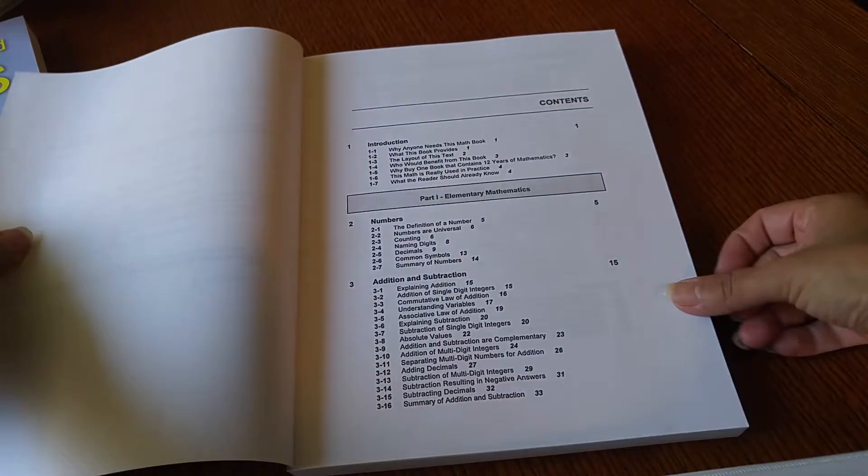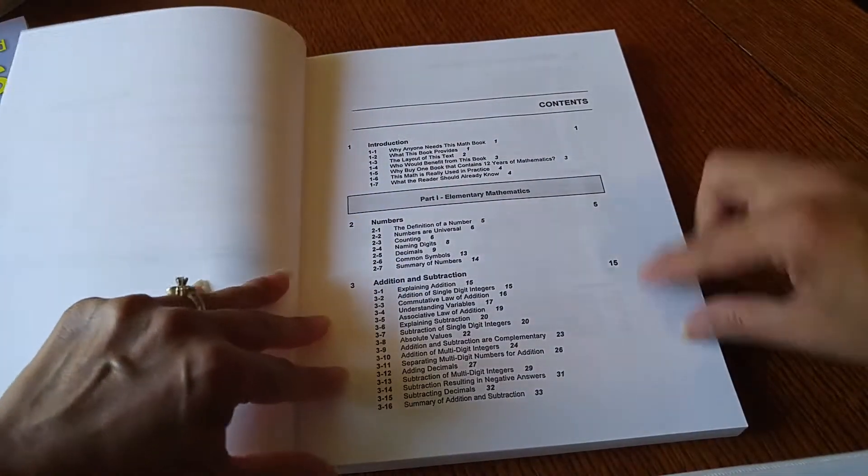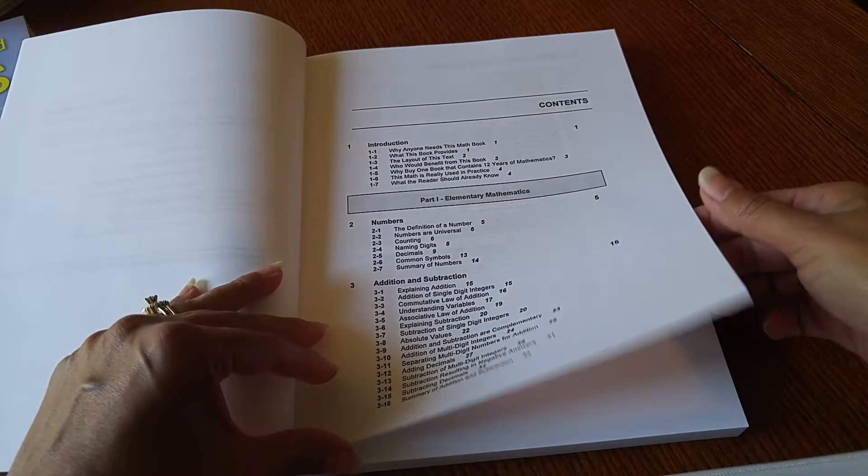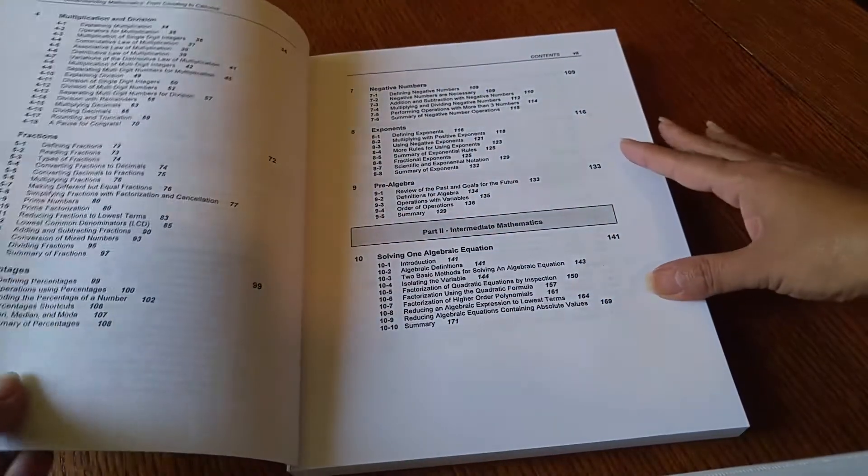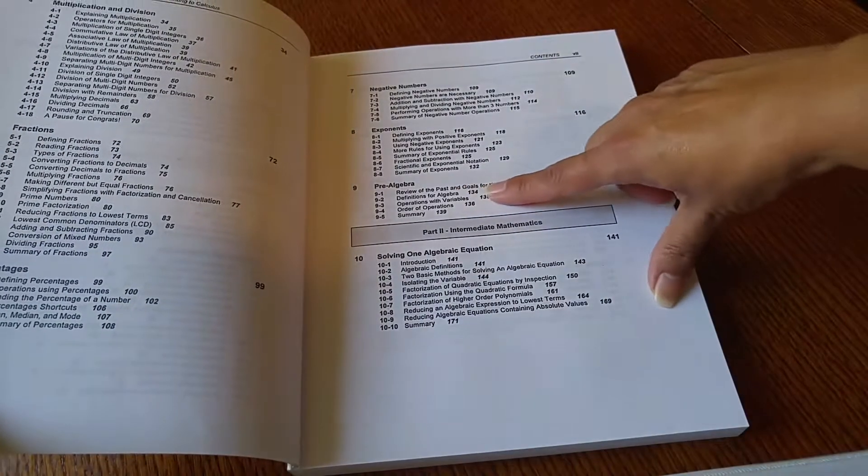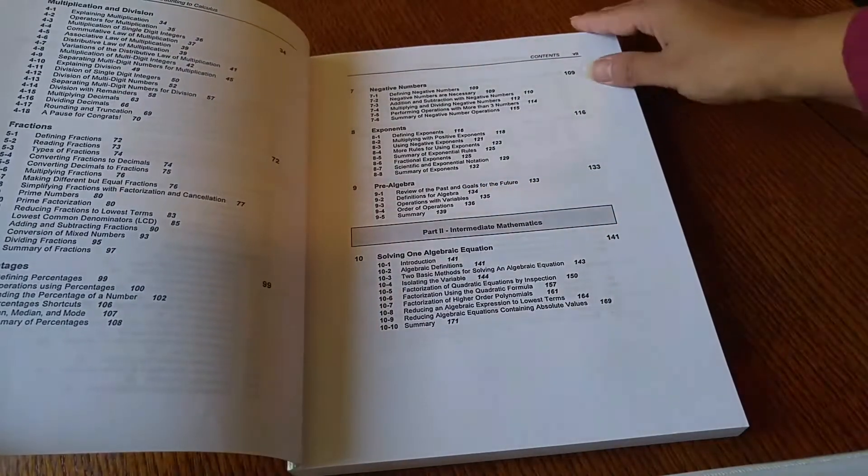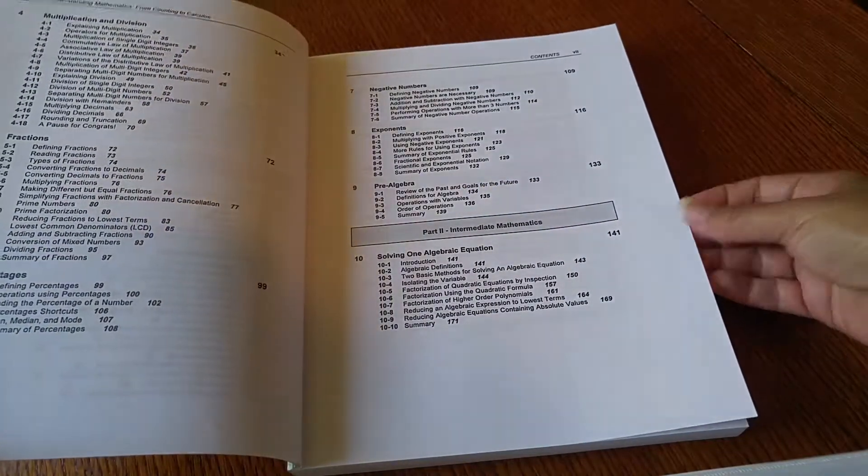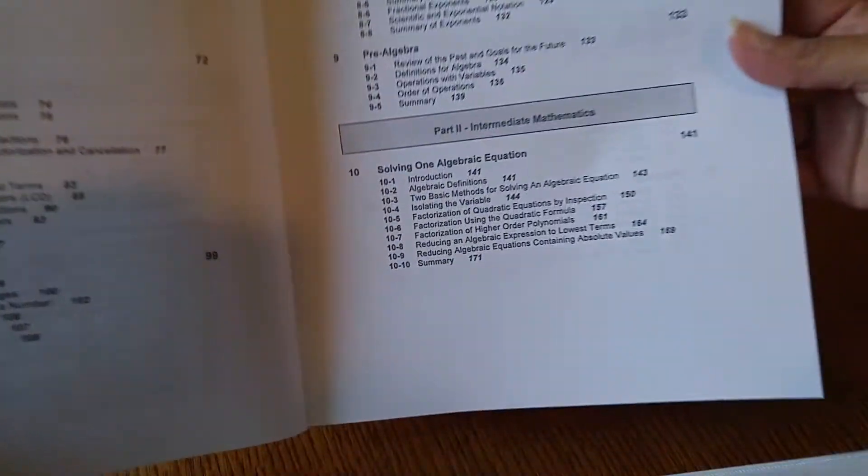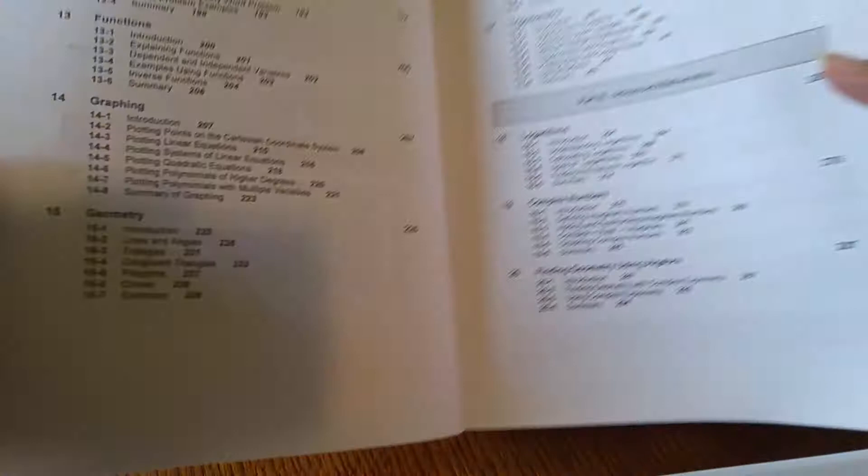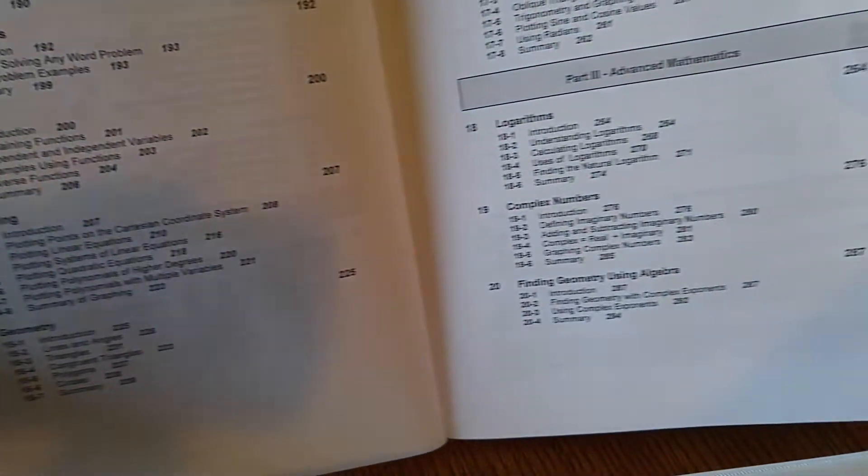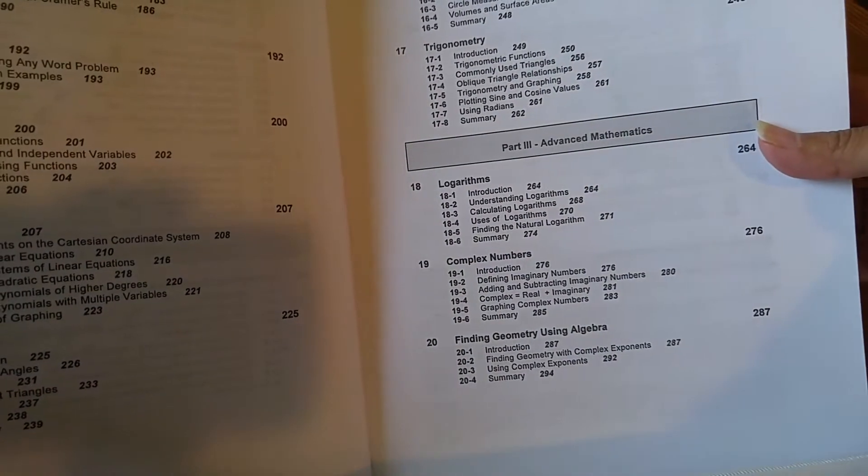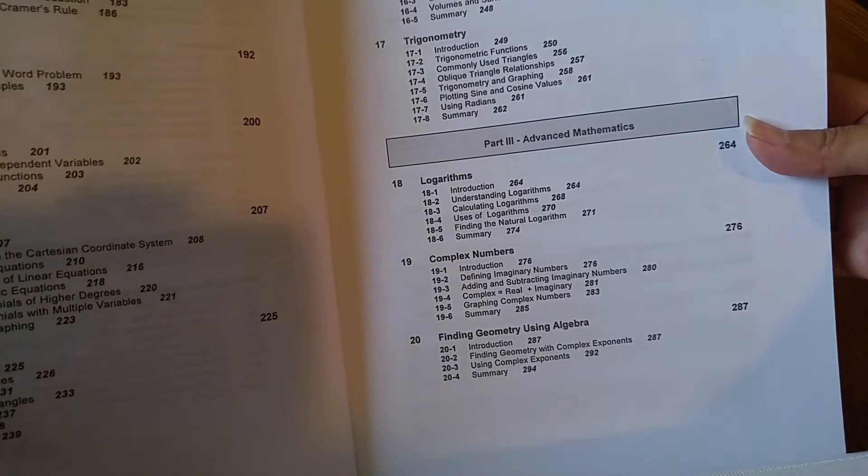Alright, here's the table of contents. Part one is elementary mathematics - you have numbers, addition, subtraction, and so forth, and there's pre-algebra. Part two is intermediate mathematics, and then part three is advanced mathematics.